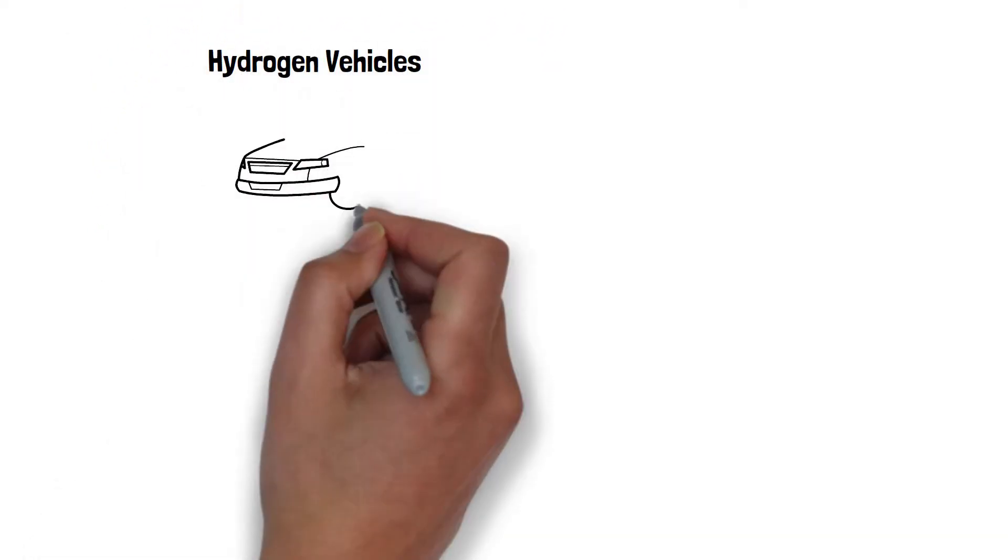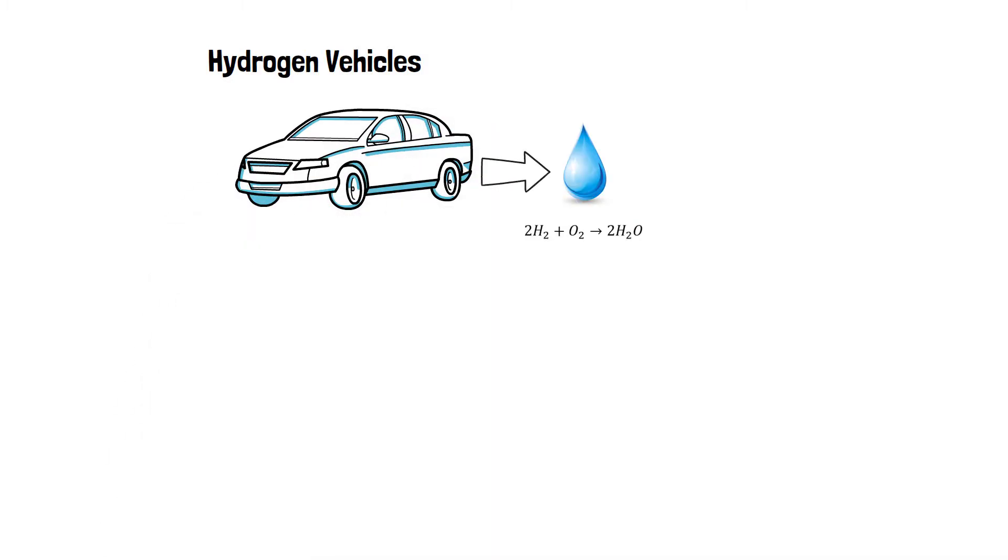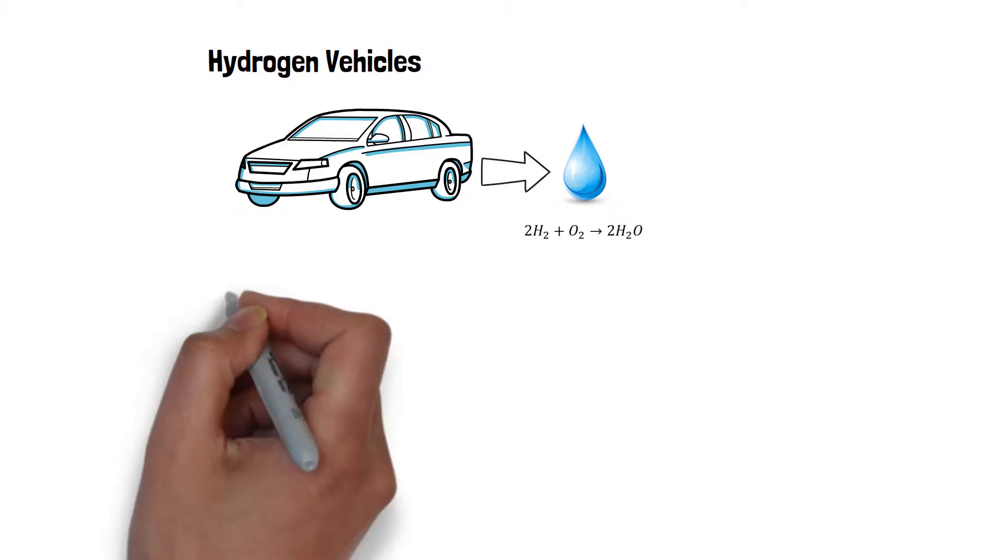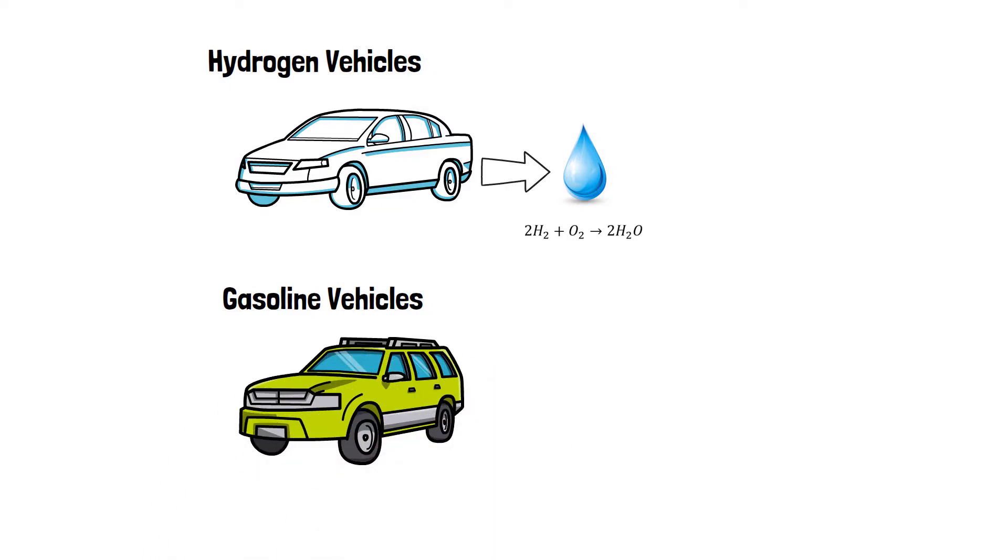This means that the only thing coming out of the exhaust is hydrogen monoxide, also known as H2O, or more commonly, water. In contrast, in the best case scenario, gasoline engines produce carbon dioxide and water.